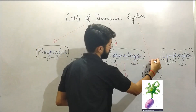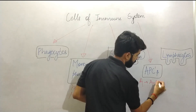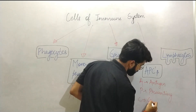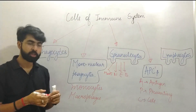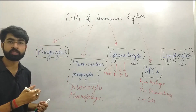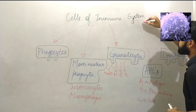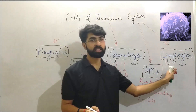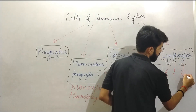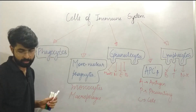Next are APCs — Antigen Presenting Cells. These are cells that take the antigen, kill it, and present it on their surface so that the immune system recognizes that something harmful has entered the body. The last type of cells are lymphocytes, which are the cells of the adaptive immune system. These are also of three types: B cells, T cells, and natural killer cells. For now we'll focus on phagocytes.